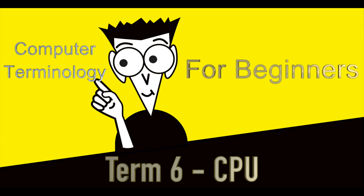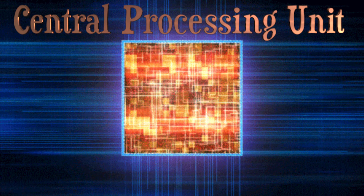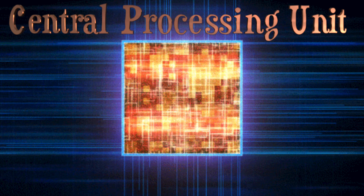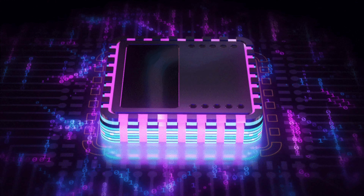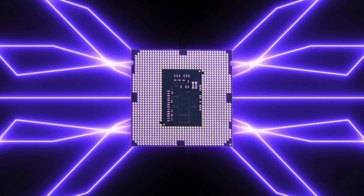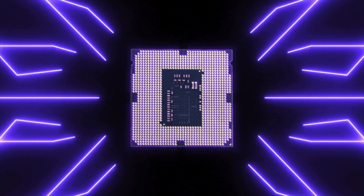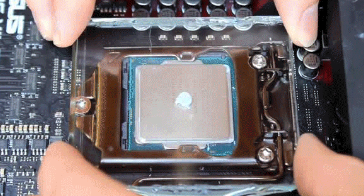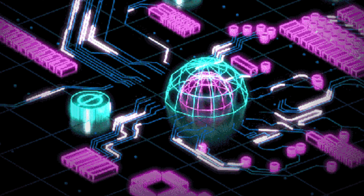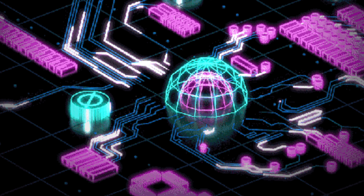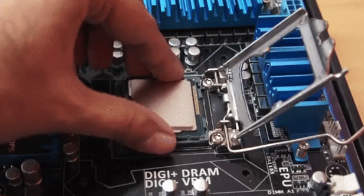Hello, welcome to another video. We will be talking about term six for computer terminology, CPU. CPU stands for Central Processing Unit. CPUs reside in almost all devices you own, whether it's a smartwatch, a computer, or even a thermostat. They are responsible for processing and executing instructions and act as the brains of your devices. The CPU is the core component that defines a computing device, and the CPU can only function alongside other hardware.